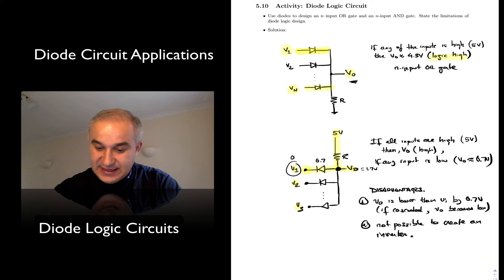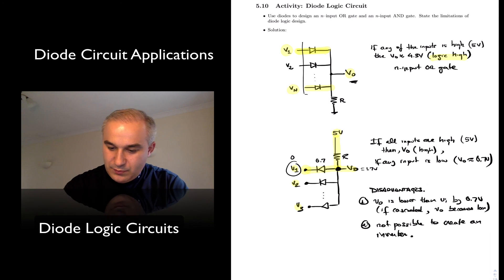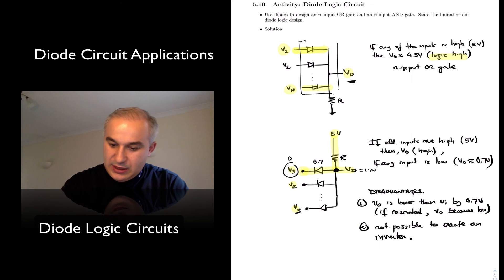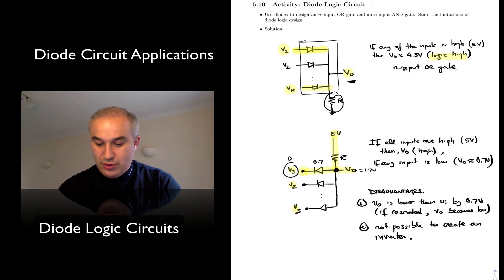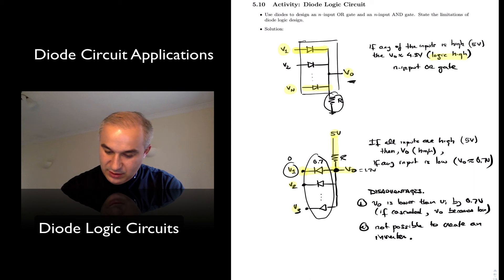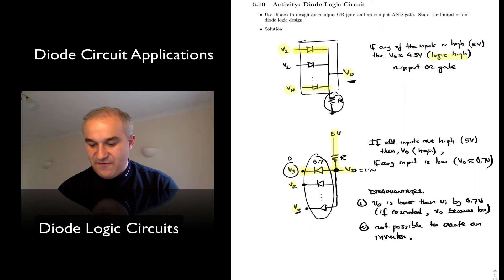Just place the diodes in parallel with a pull-down resistor to create an OR, or in parallel with a pull-up resistor to create an AND. This is a very simple design.